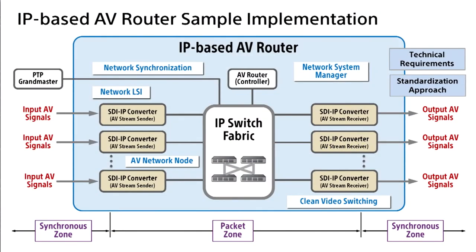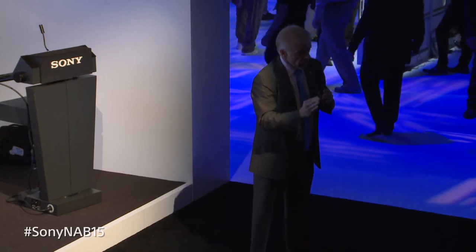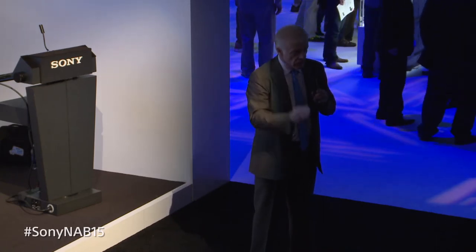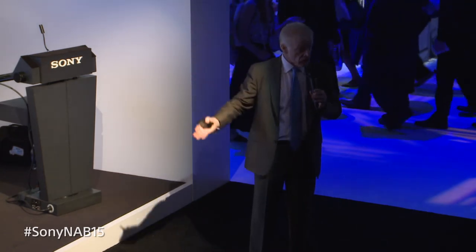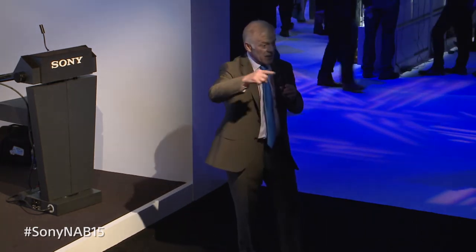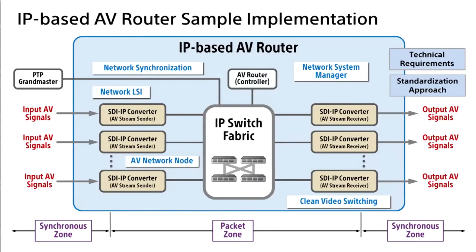There are many requirements. For audio-video-to-IP conversion we need an LSI — large-scale integrated circuit. We need a standard for network synchronization using SMPTE standards. We need intelligence — a live system manager — because IP switches don't understand video or audio. That intelligence manipulates ports on the IP switch to route IP addresses from input to output. And we need clean video switching — able to switch camera A to camera B transparently.